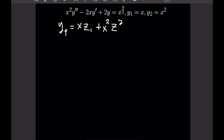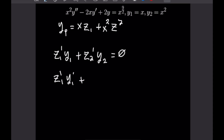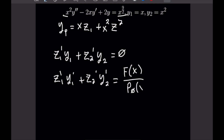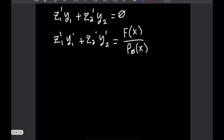From here we set up our system of equations. The first equation is z1'·y1 + z2'·y2 = 0, and the second is z1'·y1' + z2'·y2' = f(x)/p0(x). Writing these out specifically: z1'·x + z2'·x² = 0, and z1'·1 + z2'·2x = x^(9/2) / x², which is x^(9/2) divided by the coefficient of the y'' term.